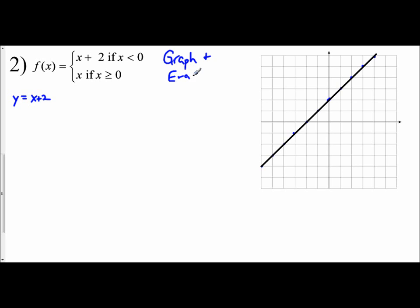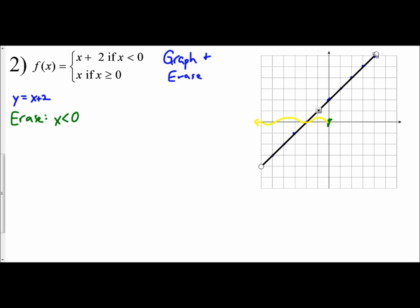Now the erase approach. We are going to erase based off of our condition, which means we erase based off of x being less than 0. Here is 0 on the x-axis. I want my graph to cover all x values less than 0 — all values to the left — so I erase everything to the right of it. Since x is strictly less than 0, that is an open circle, so I place an open circle at the starting point.